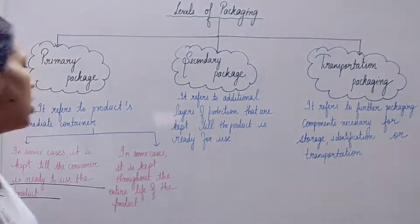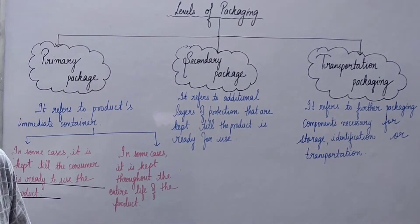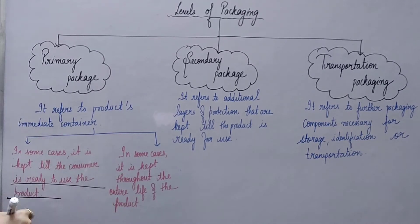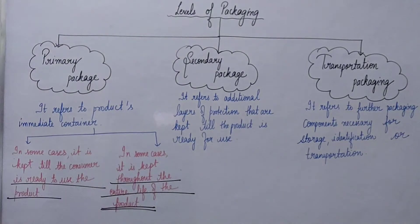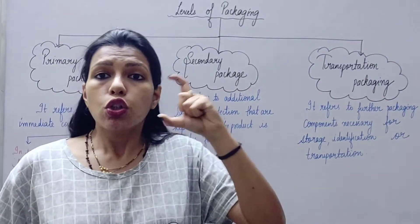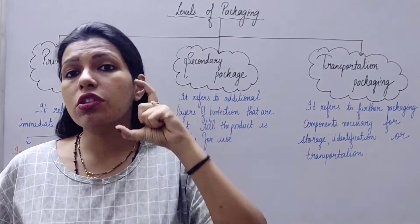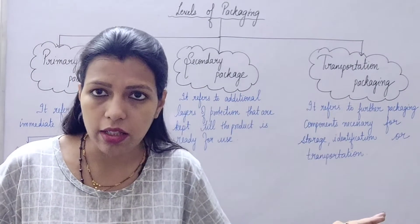So to recap: some primary packages are disposed of when we start to use the product, like socks. In other cases, we keep the product's primary package throughout the entire life of the product, like a toothpaste tube or a deodorant spray bottle. We will keep the deodorant's primary package until the deodorant inside is fully used.